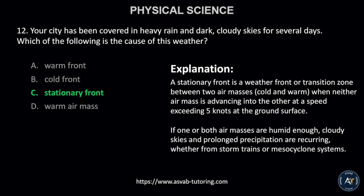A stationary front is a weather front or transition zone between two air masses, cold and warm, when neither air mass is advancing into the other at a speed exceeding 5 knots at the ground surface. If one or both air masses are humid enough, cloudy skies and prolonged precipitation are recurring, whether from storm trains or mesocyclone systems.